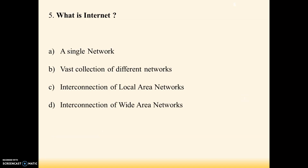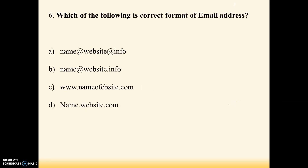Next question: what is the internet? Options are — A: a single network, B: vast collection of different networks, C: interconnection of local area networks, D: interconnection of wide area networks. Answer is D — interconnection of wide area networks.